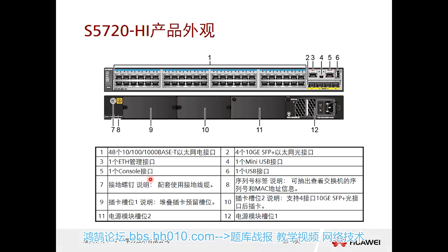The appearance of the S5720 is actually not significantly different from the S2700. On the left, the first part is a 48-port downlink gigabit interface. The second part has four 10GE optical ports used as uplinks. The third part is an Ethernet management port, generally connected to the management network.